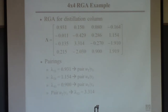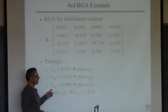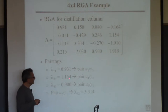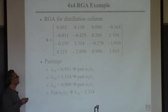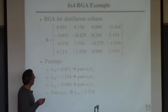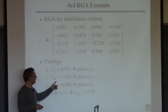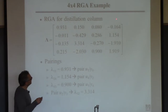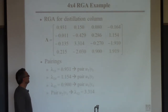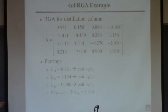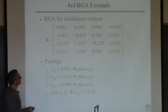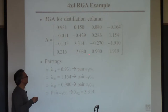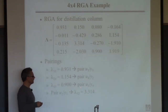Now I look — is there something near one in the remaining three-by-three? These two are essentially equally close to one, so I pick this one first — the relative gain between U4 and Y2, lambda 2,4. I'll use U4 to control Y2. That eliminates that column and row, leaving this two-by-two system. I can't use negative ones because that'll make the system unstable. So I'll pick the positive one — the relative gain between U3 and Y4. I pair those together, leaving only one thing: U2 and Y3.